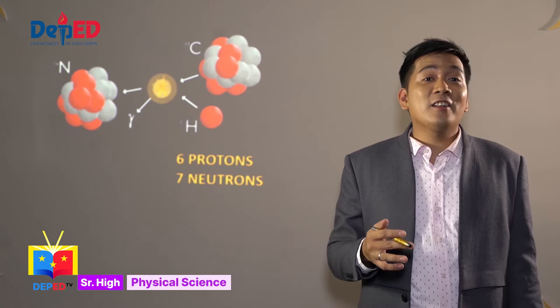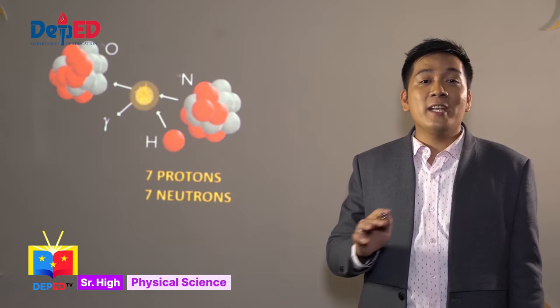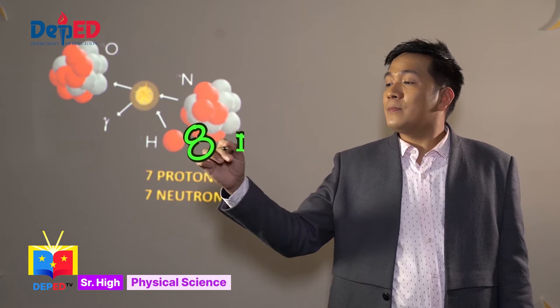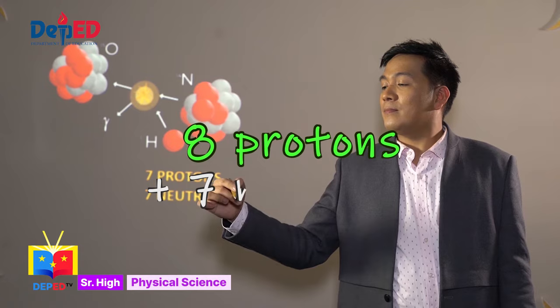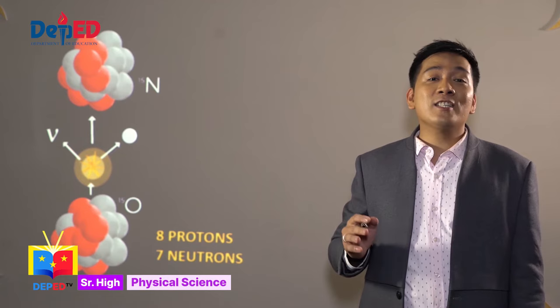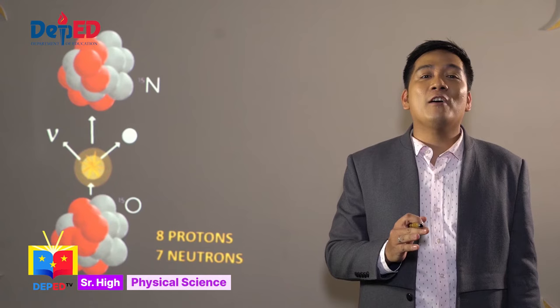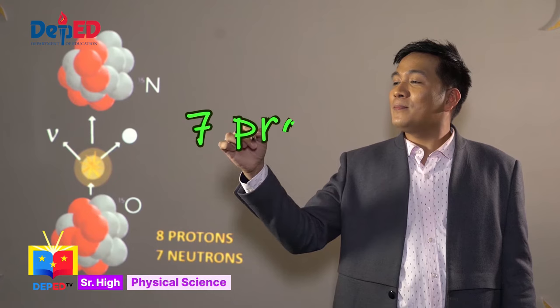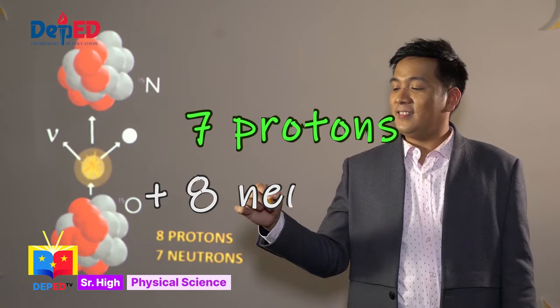As you can see from carbon-13, the nucleus turned into nitrogen-14, because instead of having 6 protons and 7 neutrons, we now have 7 protons and 7 neutrons. Then, another hydrogen atom collides and combines with the nucleus. This results to the formation of oxygen-15. The change was caused by the addition of proton in the nucleus. Now, the nucleus has 8 protons and 7 neutrons.